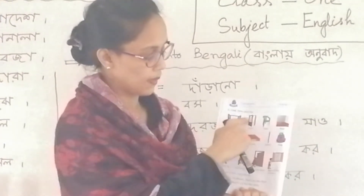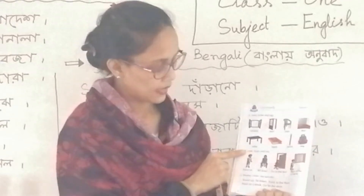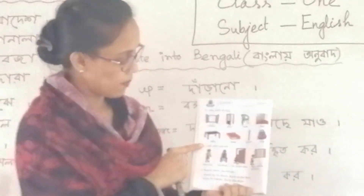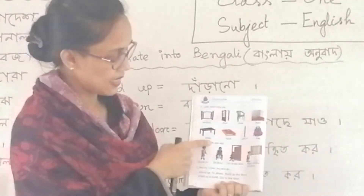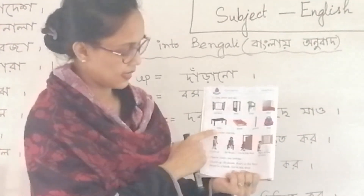এগুলো আমরা Word meaning পড়লাম। তারপর বিতে আছে কী? বিতে, Look, Listen and Say। এগুলো আমরা Word শিখেং, পোলাম, তারপর বিতে আছে কী? বিতে, Look, Listen and Say।